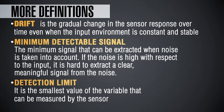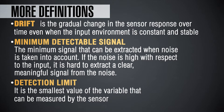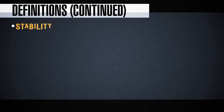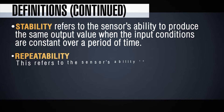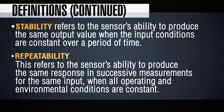Minimum detectable signal is the minimum signal you can get from the sensor when noise is taken into account. If the noise is very high compared to the output, it will be very hard to get any meaningful signal over the noise. Detection limit is the smallest value of the variable — whether you are measuring temperature or concentration of a species — that you can measure using the sensor. Stability relates to the ability of your sensor to produce the same output value when input conditions are completely constant over a period of time. Repeatability refers to the ability of the sensor to produce the same response over and over again, keeping the same input and all operating conditions identical.